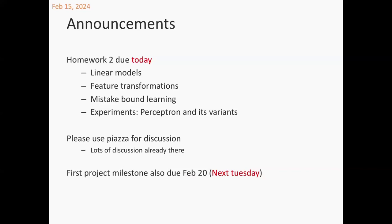Usually what happens with the class project is that some people tend to get excited. They combine the features, invent new features, do lots of feature transformations and pre-processing just to see what they can get. There's a leaderboard where you can see where you stand — you come up with an idea, try it out, submit it, and it changes something.